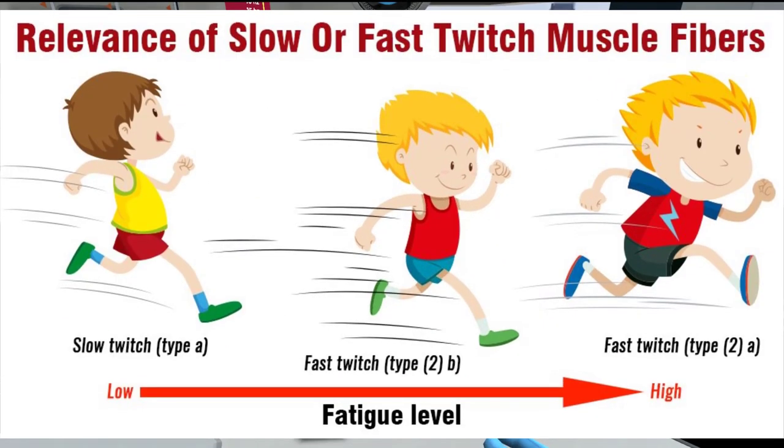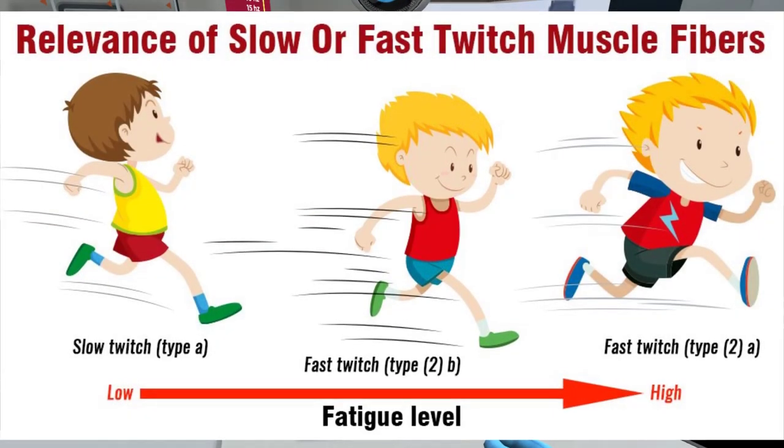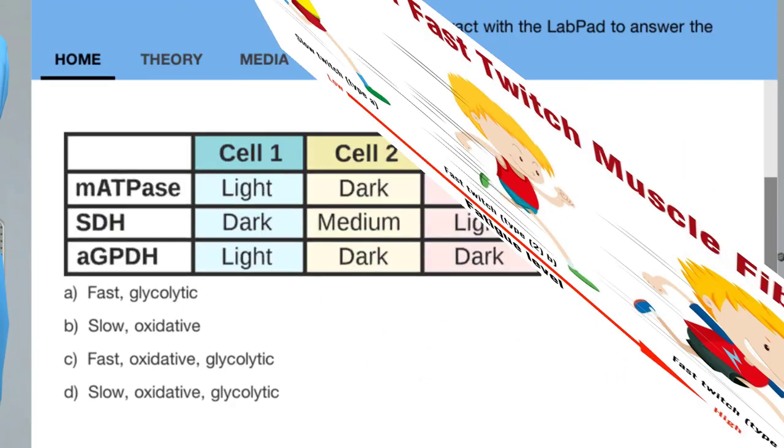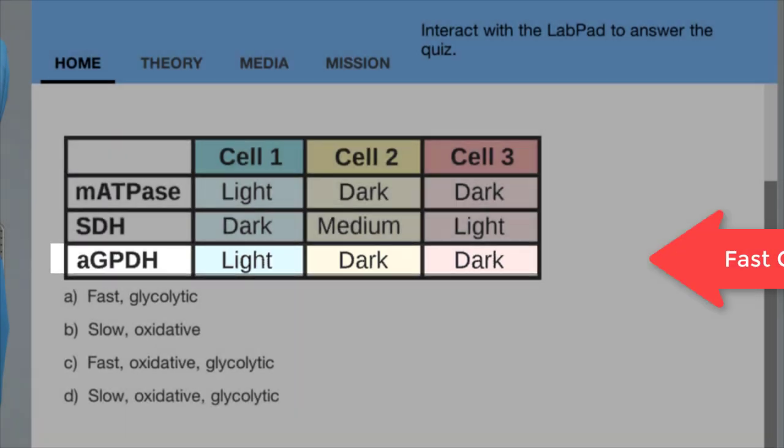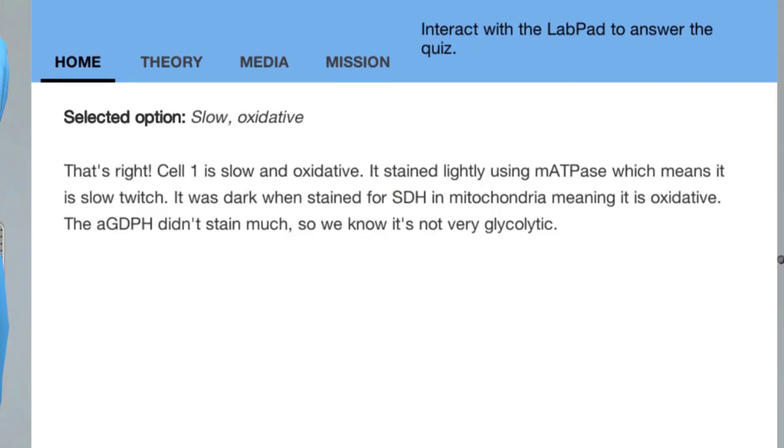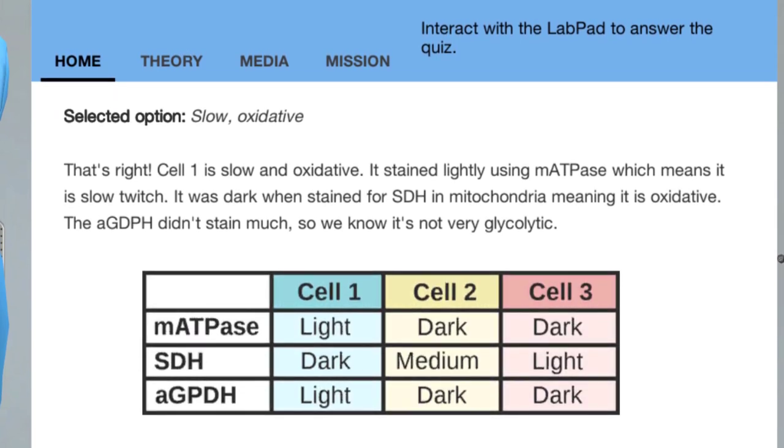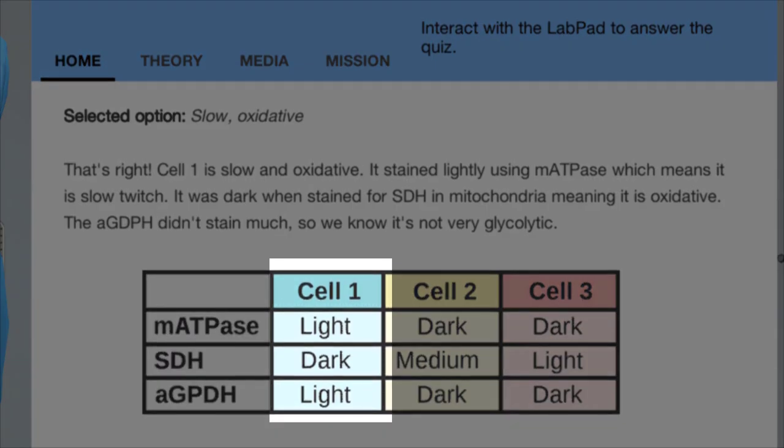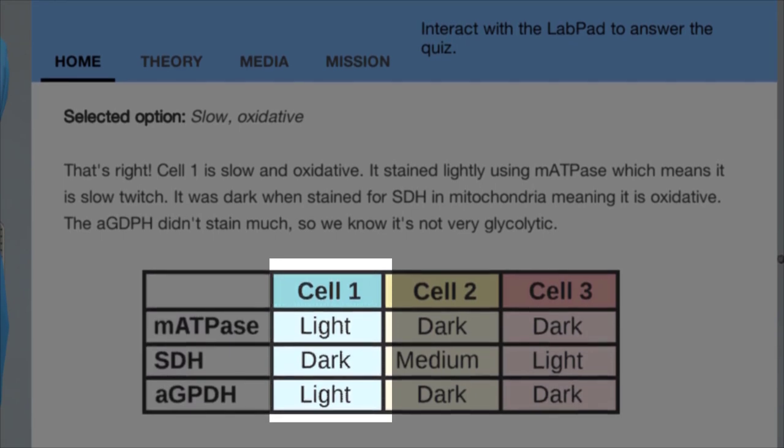There are three types of muscles. Type 1 is slow-twitching fiber, type 2A is fast oxidative muscle fibers, and type 2B are more glycolytic. The myosin ATPase stained fast fibers, AGDPH stained the glycolytic organelles and SDH stained the oxidative cells. Now it's time to put these three assays together. Looking at the table, what type of fiber is cell 1? That's right, cell 1 is slow and oxidative. It stained lightly using myosin ATPase which means it is slow-twitch. It was dark when stained for SDH in mitochondria meaning it is oxidative. The AGDPH didn't stain much, so we know it's not very glycolytic.